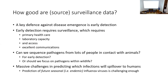Now I want to think about source surveillance data. One reason we do surveillance is as a key defence against disease emergencies through early detection. That requires surveillance, and that requires quite a lot of infrastructure — both technological and human. In many parts of the tropics, which are hot spots for disease emergence, that infrastructure does not exist.